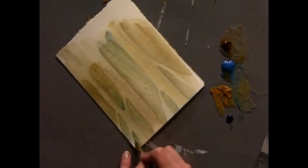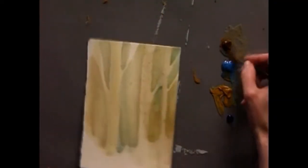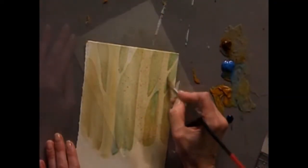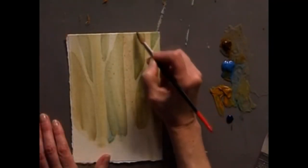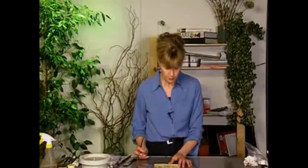I began this row of trees a little ways up on the painting rather than starting at the bottom because I want to show the trees going off into the distance. Okay, there's my first layer.